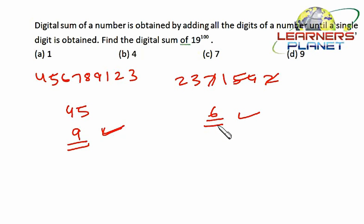So I just would make a recap over here, that digital sum of any number is the remainder which we are getting if we divide that number by 9. If we are getting the remainder as 0, then the digital sum will be 9 only as in this case.